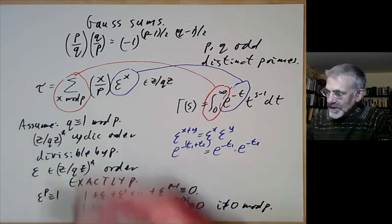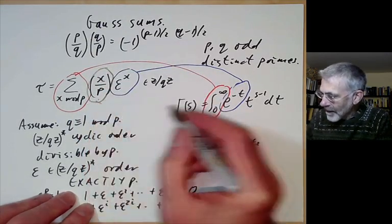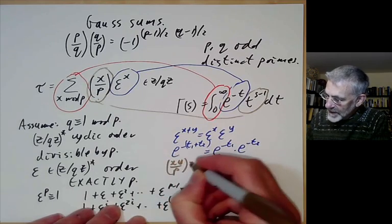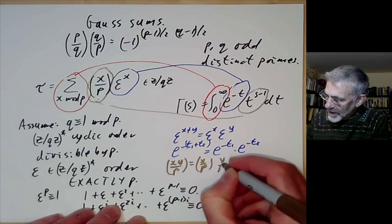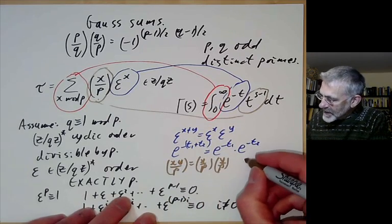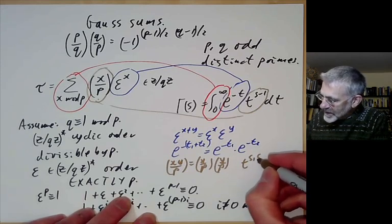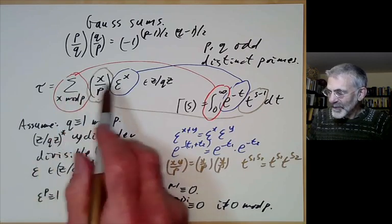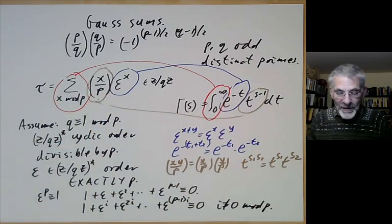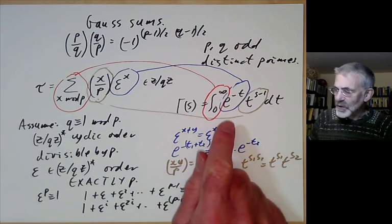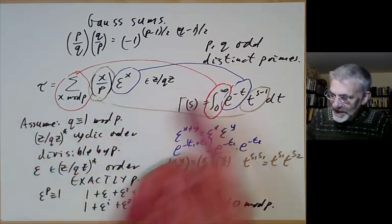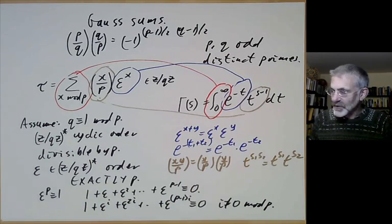Also, epsilon^x corresponds to e^(−t) because both satisfy the exponential property: epsilon^(x+y) = epsilon^x · epsilon^y, and e^(−(t₁+t₂)) = e^(−t₁) · e^(−t₂). Finally, the Legendre symbol (x/p) and t^s are both multiplicative: (xy/p) = (x/p)(y/p), and t^(s₁+s₂) = t^s₁ · t^s₂. So the Gauss sum is actually reasonably similar to the gamma function, and any formula for the gamma function quite often has an analogue for Gauss sums and vice versa, even if they're not exactly the same.